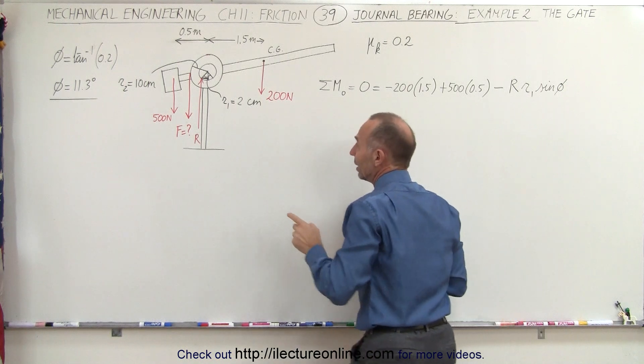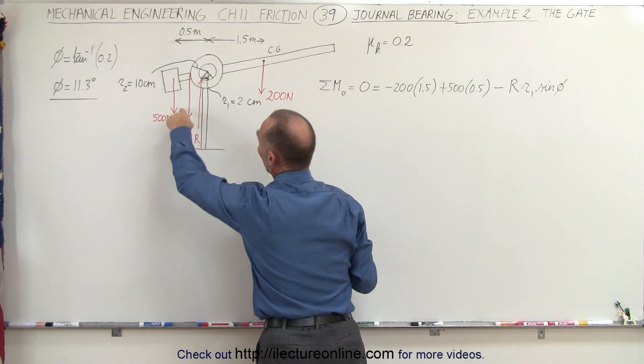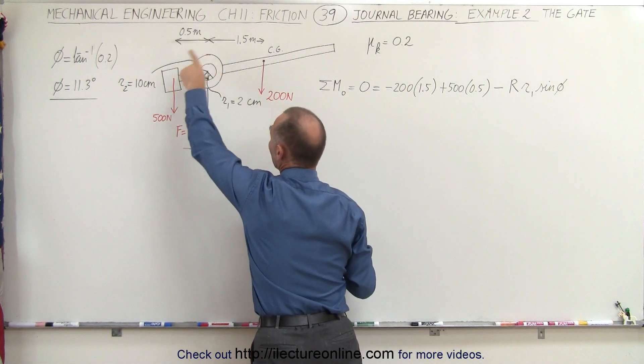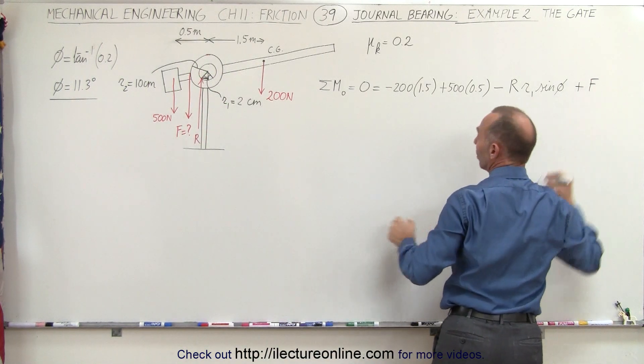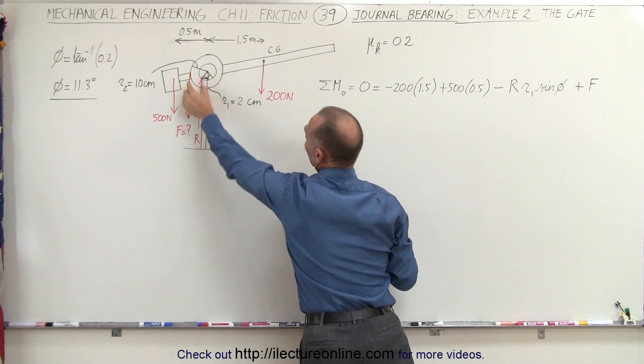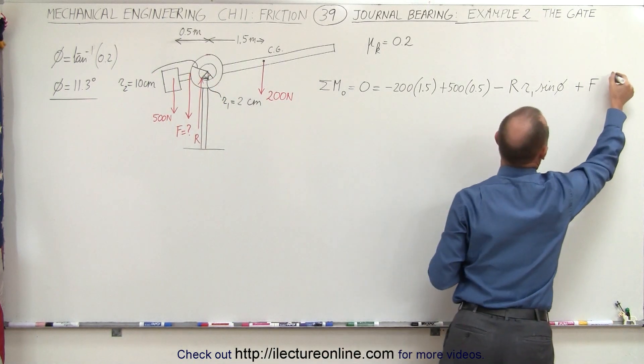And then finally, we have to find the force here, which is going to give us a counterclockwise direction, that's plus F times the moment arm, that would be the full 10 centimeters right there, so 0.1 meter.